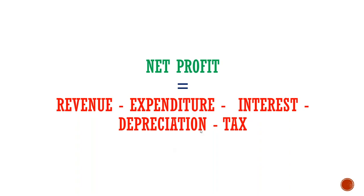Then, if we subtract tax, we arrive at net profit. So earnings for EPS comes from this net profit figure.